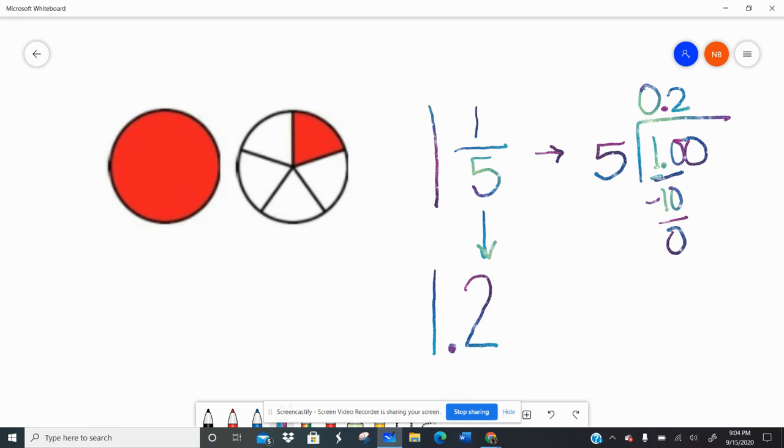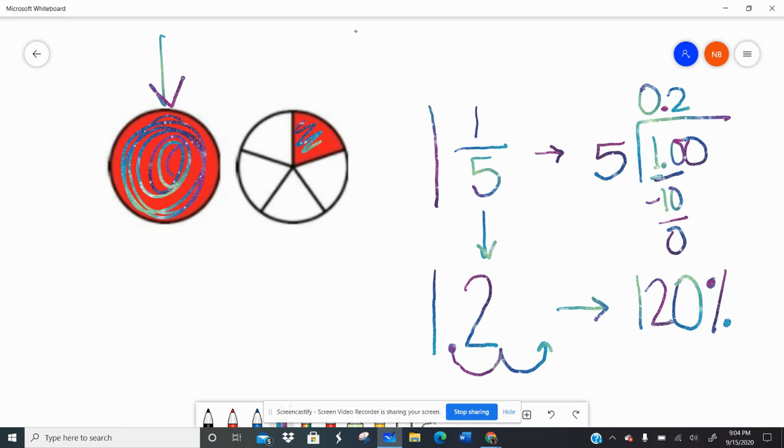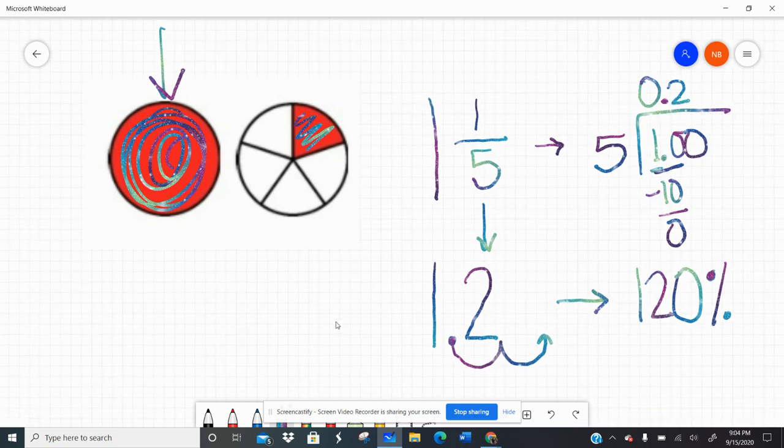So that 1 fifth is equivalent to 2 tenths or that 1.2. So 1 and 1 fifth equals 1 and 2 tenths. If I wanted to make that a percent, I move 1, 2 spaces, and I need to put in that 0 placeholder. I have 120%. Remember, you can have percents over 100. Like if this was pizza, I have one whole pizza here and then I have a little bit of the second pizza left over. So I have 100% of a pizza and then 20% of the second pizza.